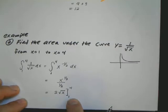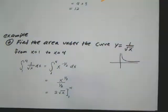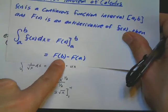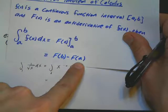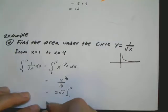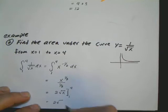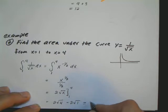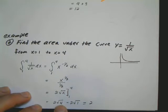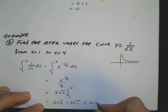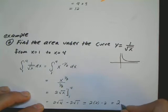Lower limit is 1, upper limit is 4. And then I go ahead and plug in my top limit minus my lower limit. So it's going to be 2 square root of 4 minus 2 square root of 1. It simplifies to 2 times square root of 4 is 2 times 2 minus 2, which is going to give me just a 2.